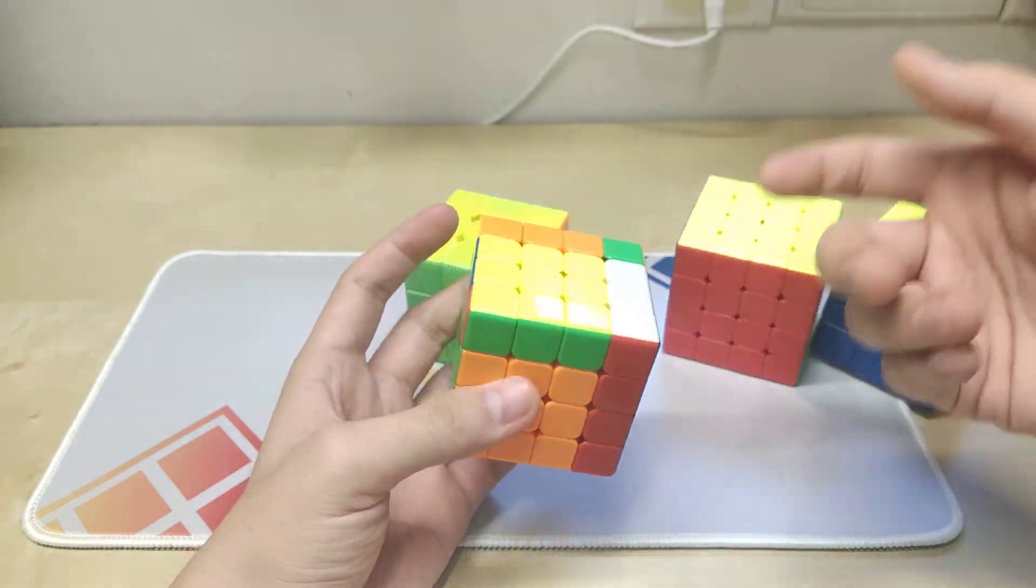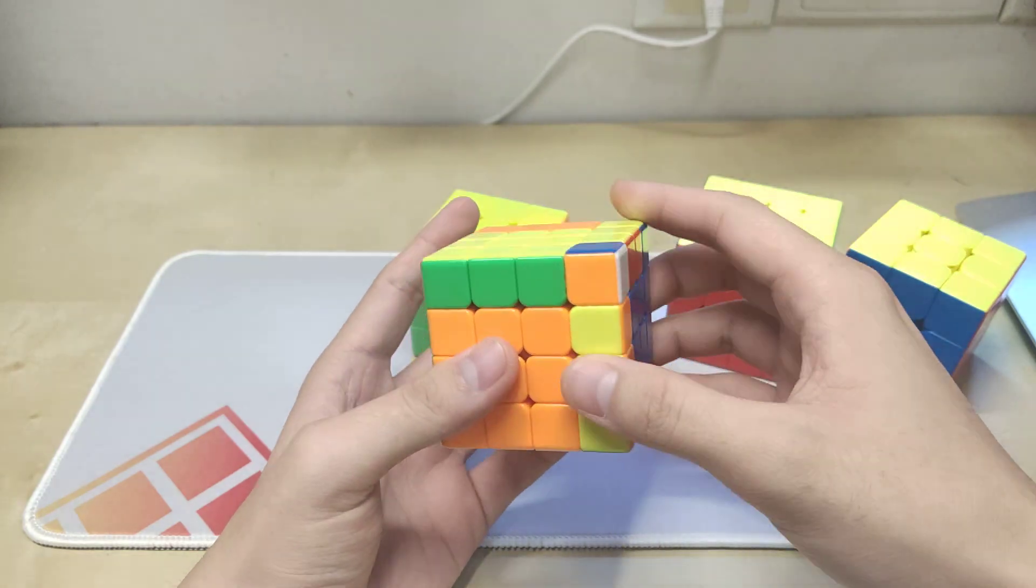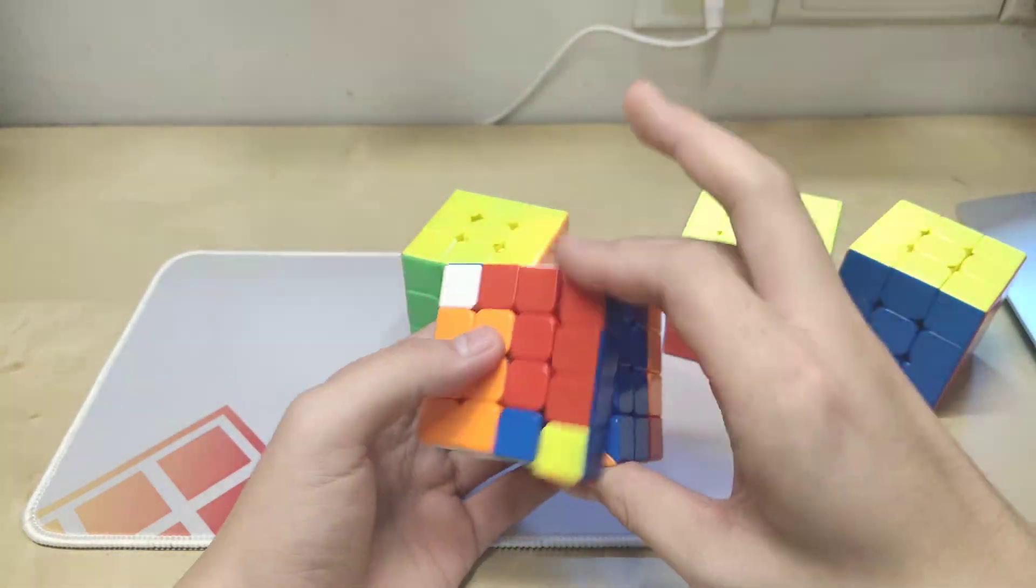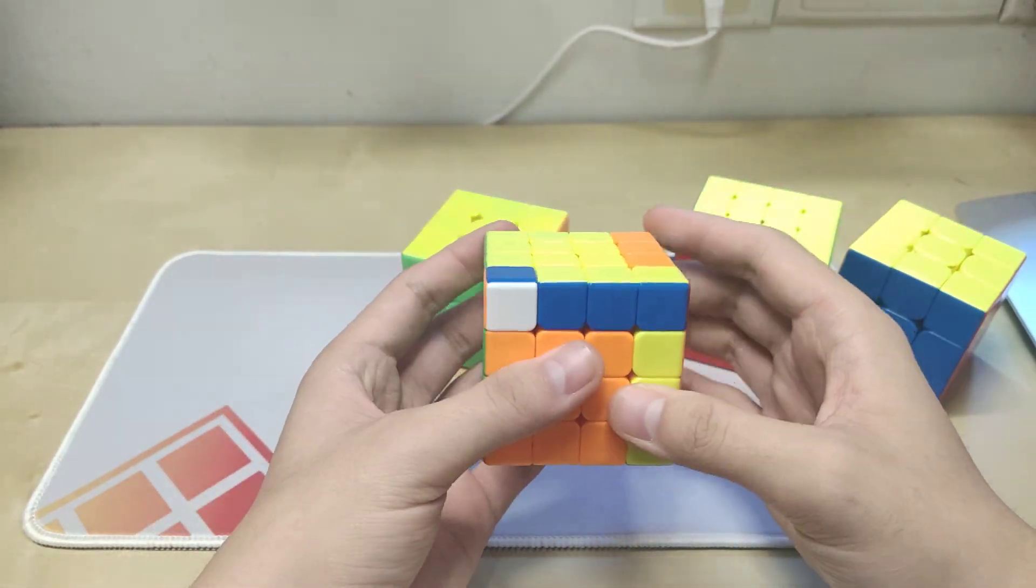And here, instead of doing R', we do R'2 to put this two as the opposite direction, and PLL parity. Finally, the four moves.